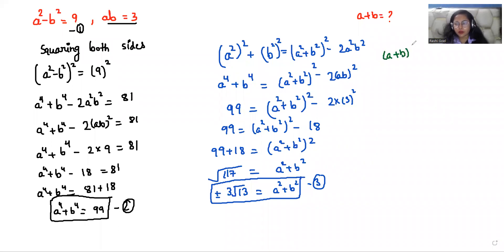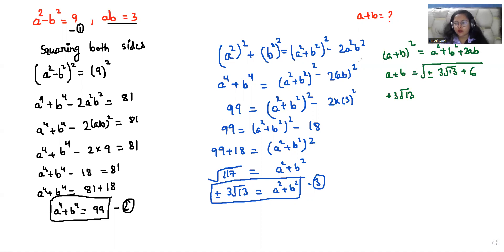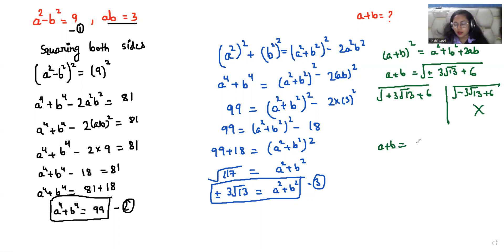I'm considering this as equation number 3. Now we use the formula: a plus b whole squared is equal to a squared plus b squared plus 2ab. So a plus b whole squared equals plus or minus 3 root 13 plus 2 times ab, which is 6. We have two values: either plus 3 root 13 plus 6, or minus 3 root 13 plus 6. The negative value will be rejected since the number must be positive. So the value of a plus b is the square root of 3 root 13 plus 6.